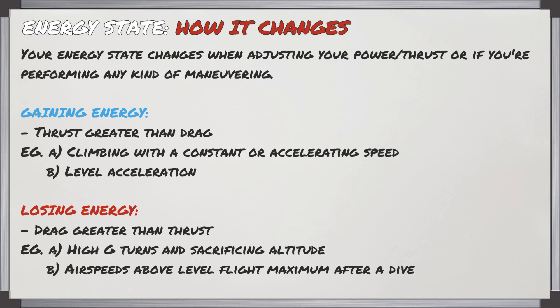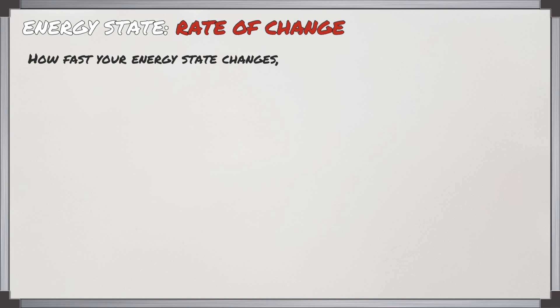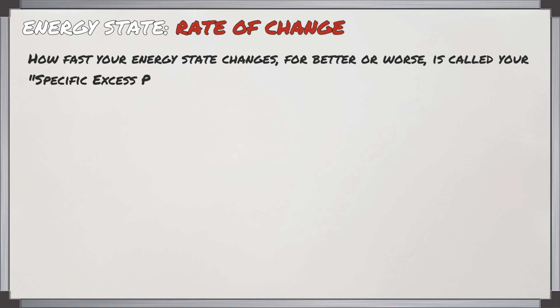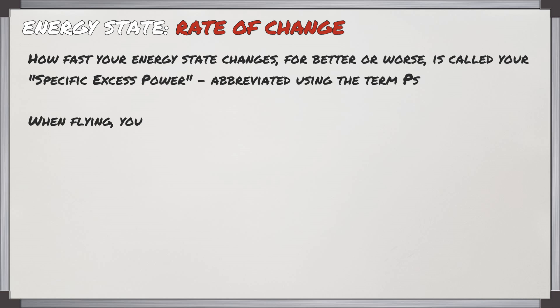On the other hand, you could be losing energy, in which case drag is greater than thrust. This occurs during high G turns and sacrificing altitude, or airspeed above your level flight maximum after completing a dive. How fast your energy state changes, for better or worse, is called your Specific Excess Power, abbreviated as P-sub-S.